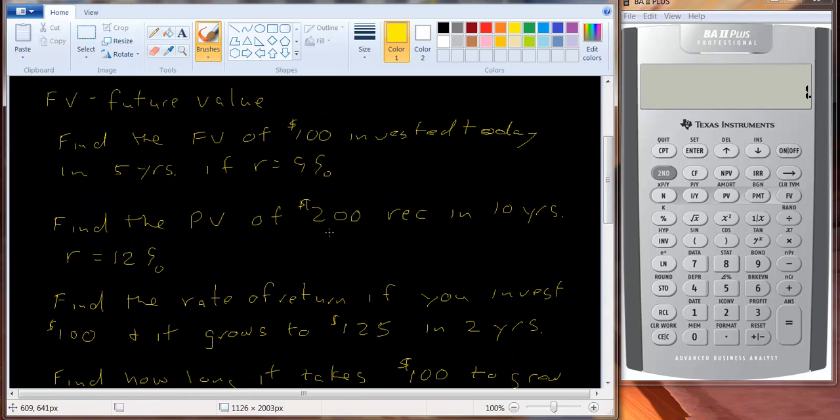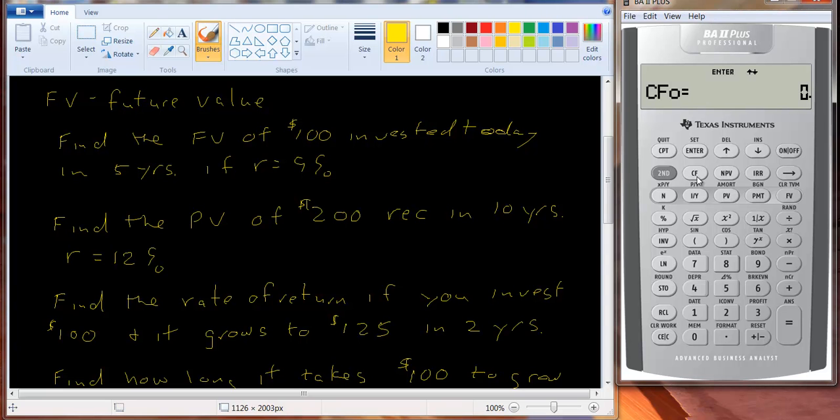We found the present value of $200 received in 10 years. So let's see how this works. If I could use this, this isn't quite as efficient, but let me use this cash flow. Okay, nothing in year zero. And we have zero in year one. And in fact the frequency is, is that for nine years you get nothing. So I put in a nine, that's the frequency. And then you get 200. And let's enter that. And then you can go to something called NPV, net present value. You have to put in the interest rate, 12%, enter, down arrow key, and compute. And I believe that's what we got before 64.39.